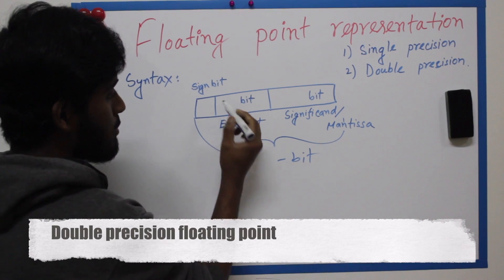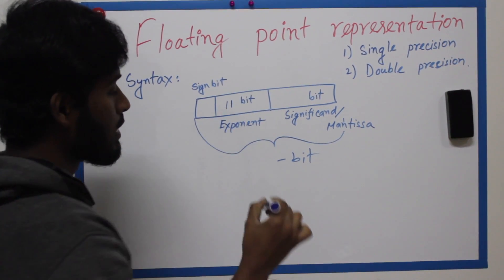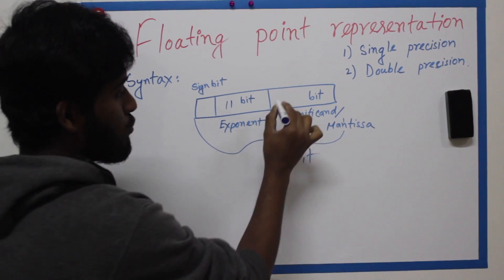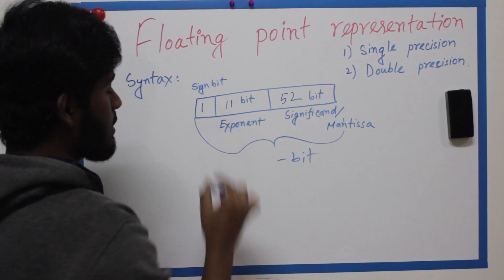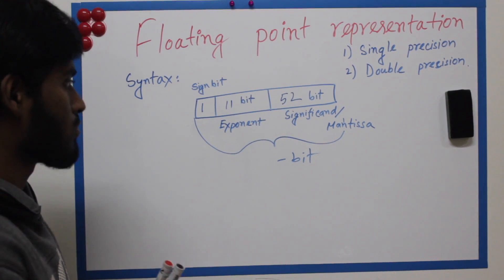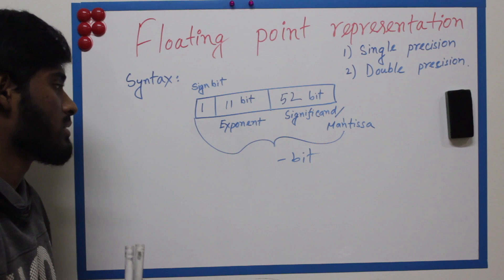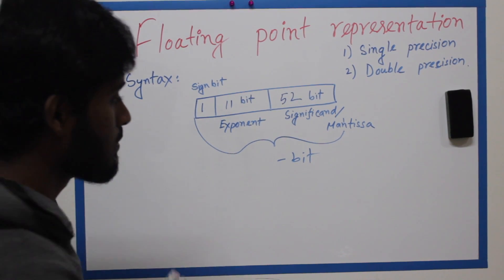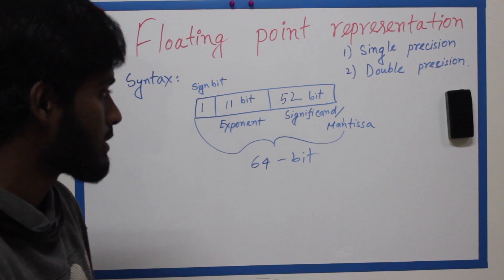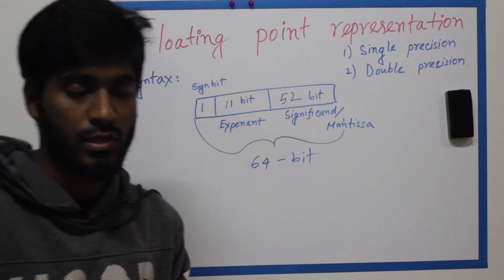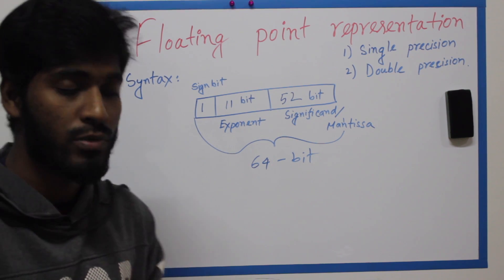For double precision: 11 bits for the exponent, 52 bits for the significant, and 1 bit for the sign. So the total is 52 plus 11 plus 1 equals 64 bits. That's pretty clear — single precision is 32 bits and double precision is 64 bits.